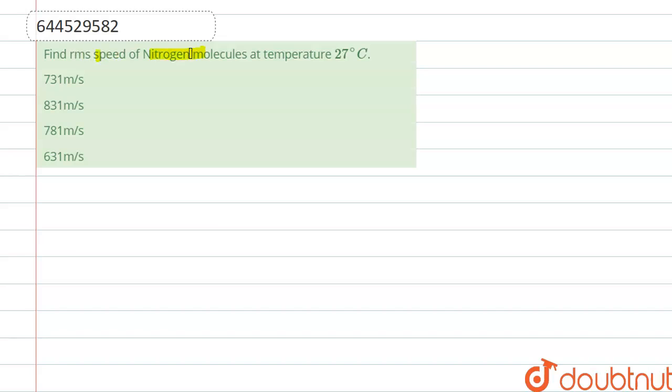RMS speed of nitrogen molecules at temperature 27 degrees Celsius. We know that RMS speed can be calculated by the formula: square root of (3RT/M), where R is the gas constant whose value is 8